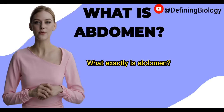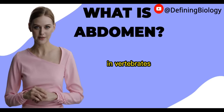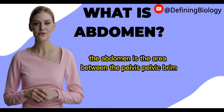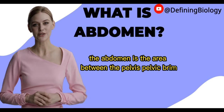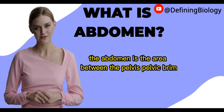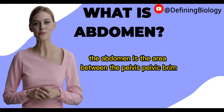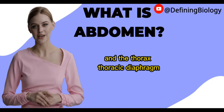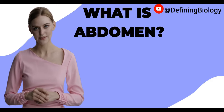What exactly is abdomen? In vertebrates, including humans, the abdomen is the area between the pelvis, pelvic brim, and the thorax, thoracic diaphragm.